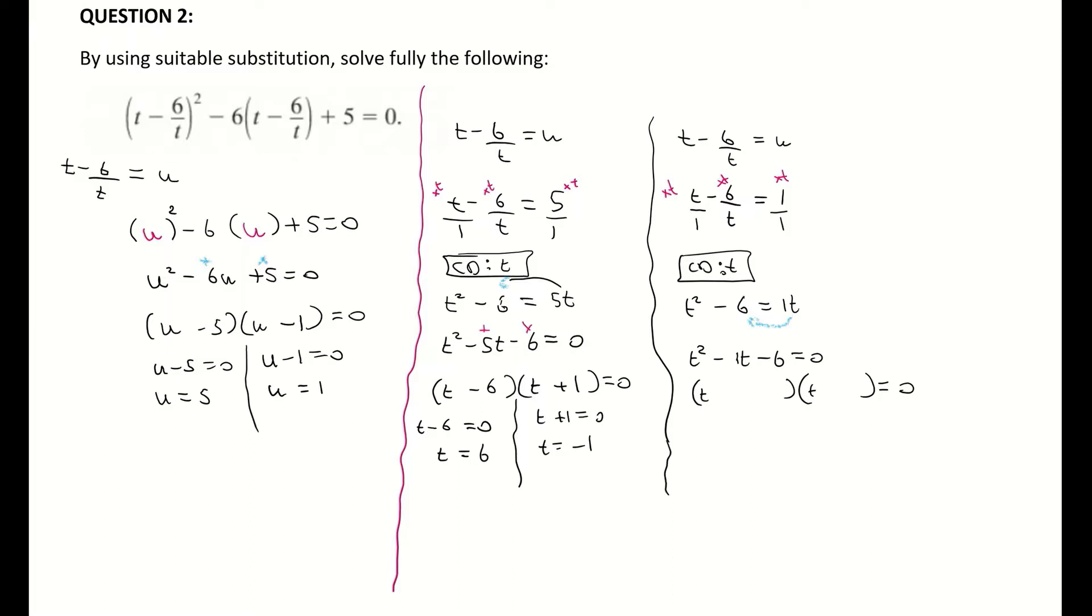And don't forget I have my second quadratic over here on the right-hand side. So two numbers that multiply to negative 6, adds to negative 1 - that is minus 3 and a plus 2. Minus 3 multiplied by 2 is minus 6, minus 3 plus 2 is minus 1. Therefore I have t minus 3 equals 0, t equals positive 3. And t plus 2 equals 0, t equals negative 2.